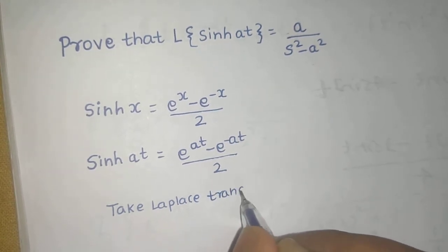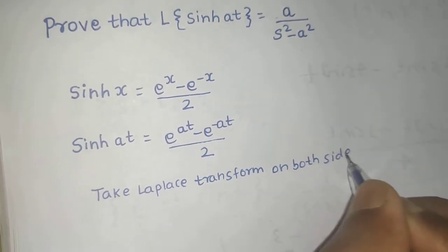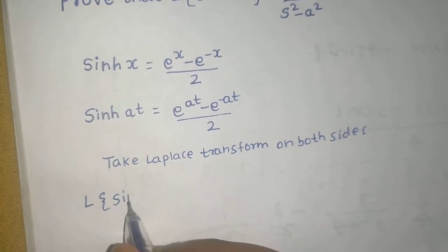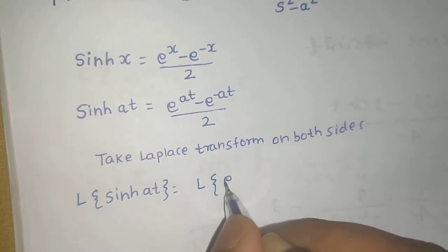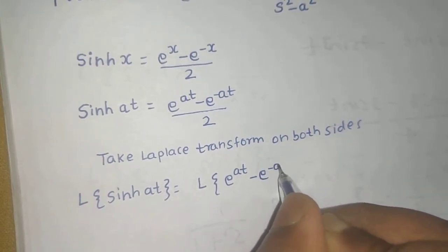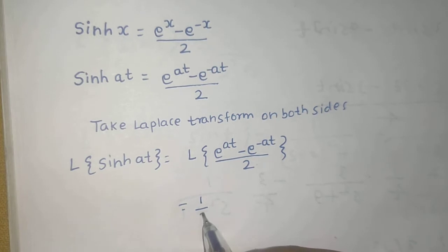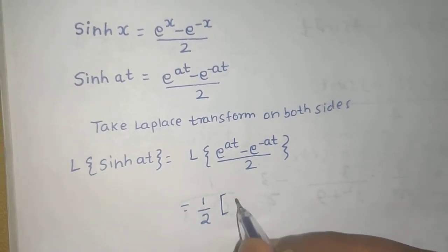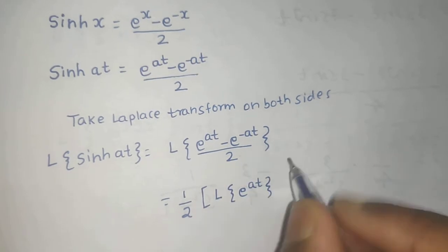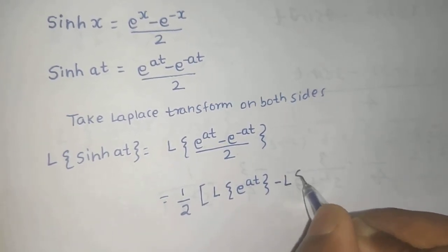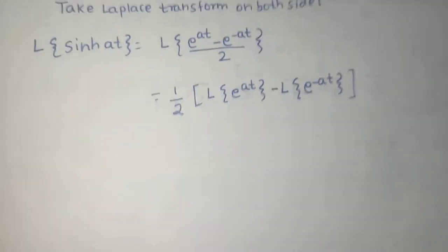Now take the Laplace transform on both sides. We will get: Laplace of sinh(AT) equals Laplace of (e raised to power AT minus e raised to power minus AT) divided by 2. The factor of 1/2 comes out, and we can write this as Laplace of e raised to power AT, minus Laplace of e raised to power minus AT.